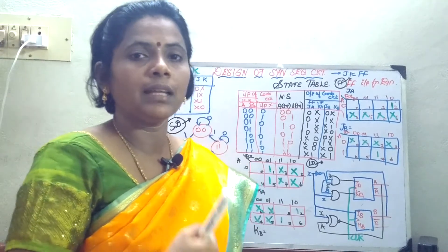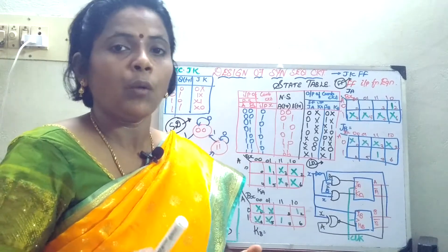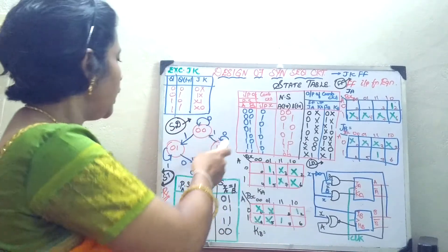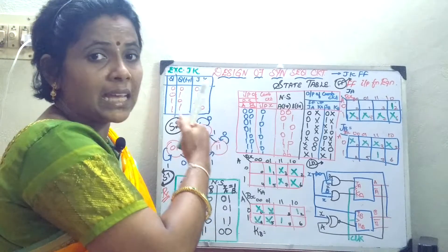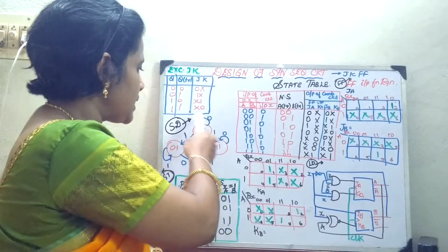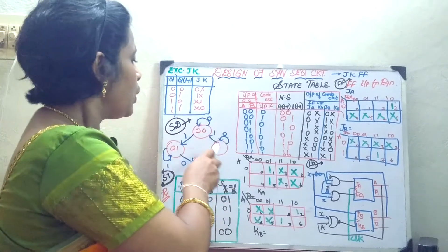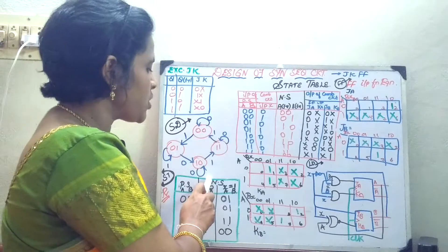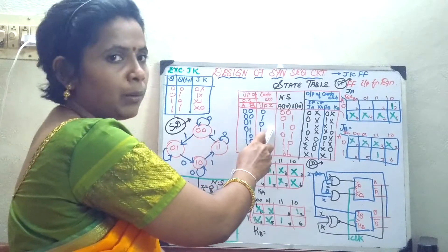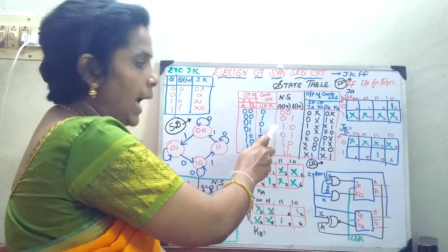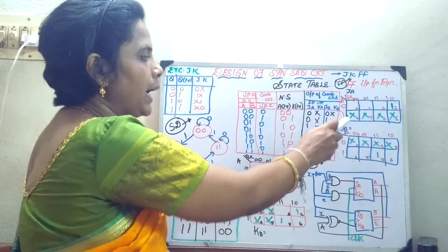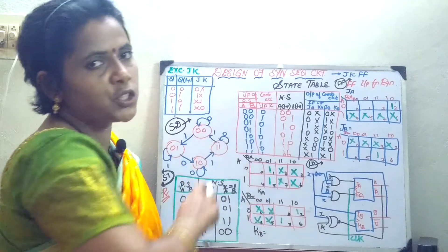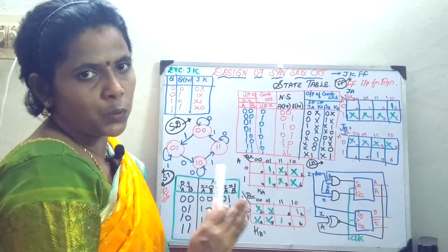Now whenever we want to design it — that is the analysis case — so here, whatever we have seen as the output in the previous case, that is the state diagram. So from the state diagram, we will arrive at the reduced state table, then the extended state table, and then we will do the K-map and arrive at your input equations and draw the logic diagram. So from the state diagram, it is just the vice versa of it.